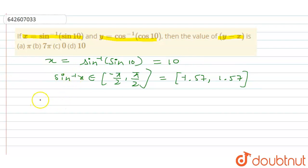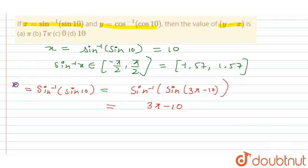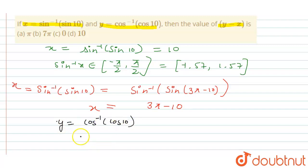So first we will write sin inverse sin 10 as sin inverse sin (3π minus 10), because we know that the sin function is positive in the first and second quadrant. This 3π minus 10 is in the second quadrant where sin is positive, so we can write it in this form. From here, sin inverse and sin cancel, and we get x equals 3π minus 10.